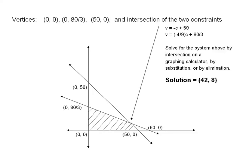So to solve our problem, we have this graph with feasible region. Three of our vertices are intercepts, the point 0,0, the point 0 and 80 thirds, and the point 50,0.